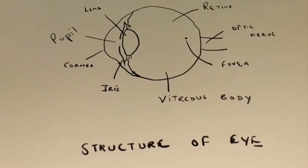The light enters the eye from the cornea, goes to the pupil, goes to the lens, and it focuses on the retina at a point called the fovea.